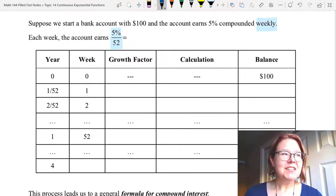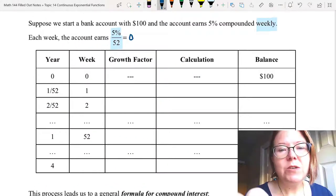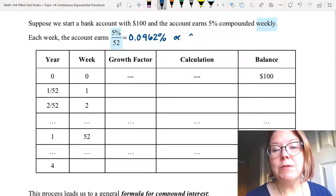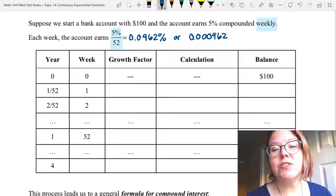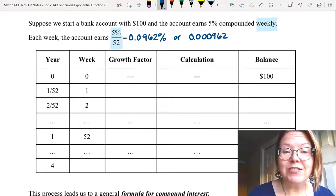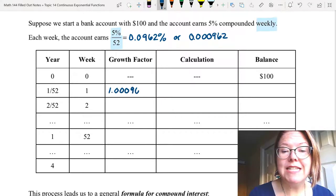And we're back. Let's start with that 5% divided by 52. That results in 0.0962% interest or, as a decimal, 0.000962. So a very small growth rate. The growth factor is going to be 1.000962.